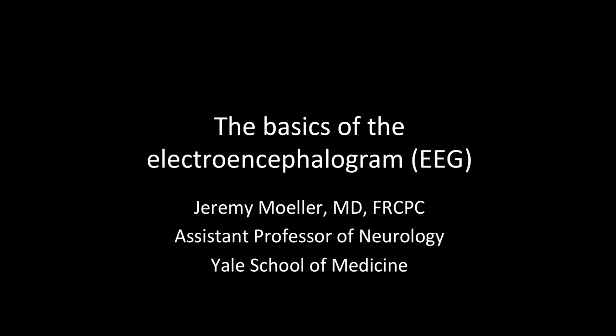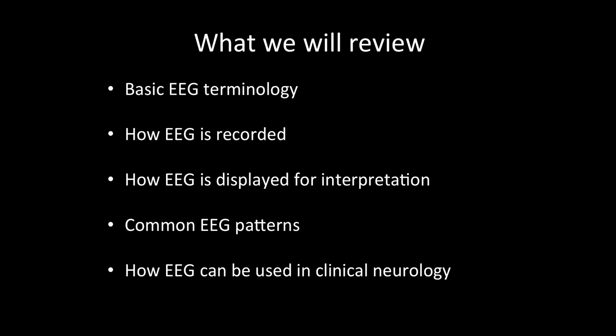In this video, we will review the basics of the electroencephalogram, or EEG, how it's recorded and how the results can be used in clinical neurology. We will review several topics briefly during this video. The topics will be reviewed in further detail in subsequent videos for those interested in deeper dives into the world of EEG. We will review some of the basic terminology of EEG, how EEG is recorded, how EEG is displayed for interpretation, some common EEG patterns, and how we can use the results of EEG for making decisions in clinical neurology.